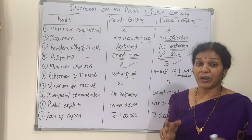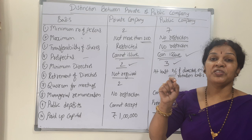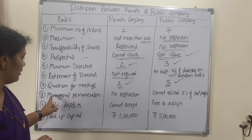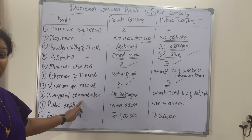Next is quorum for a meeting — the minimum number of members required to conduct a meeting. For a private company, the quorum is two shareholders. For a public company, the quorum is five — a minimum of five shareholders are required to conduct any meeting.